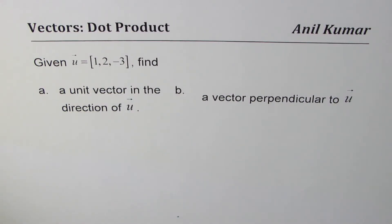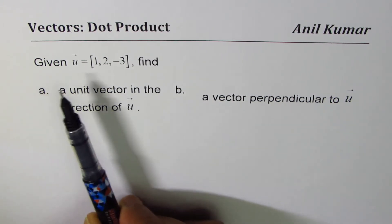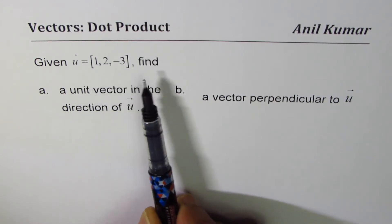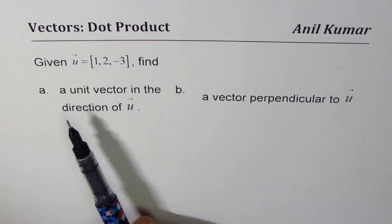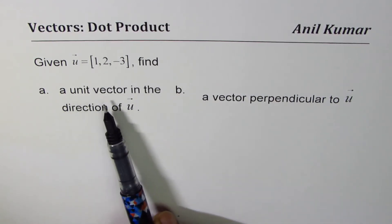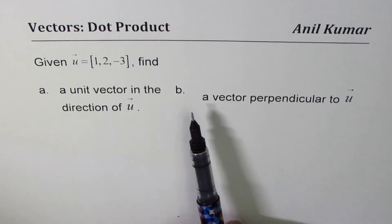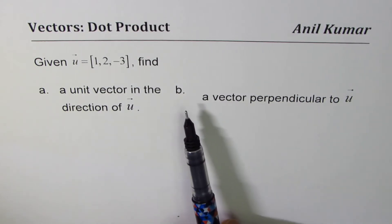I'm Anil Kumar. Let us explore dot product of vectors in R3. Here we are given a vector u which is (1, 2, -3). We need to find a unit vector in the direction of u, and part b is a vector perpendicular to u.